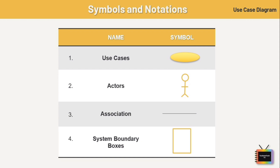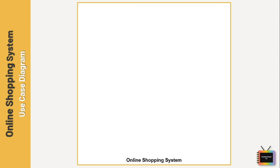Finally, system boundary boxes — the rectangular boundary represents the system. Use cases fall inside it and actors are placed outside it. Now let's draw our use case diagram for an online shopping system. First we'll draw the system boundary and then write the use case name, which is mandatory.